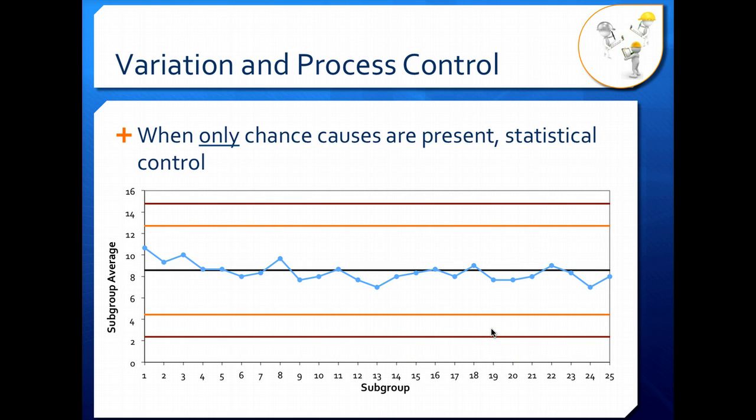When you have only chance causes present, your process is considered to be in statistical control. And so your control chart would look at something like this. You don't have any points outside of your warning or action lines. Everything is reasonably clustered around the process center. You do have a little bit of variation still. No process is going to produce the same thing a hundred percent of the time, but the variation is not large.